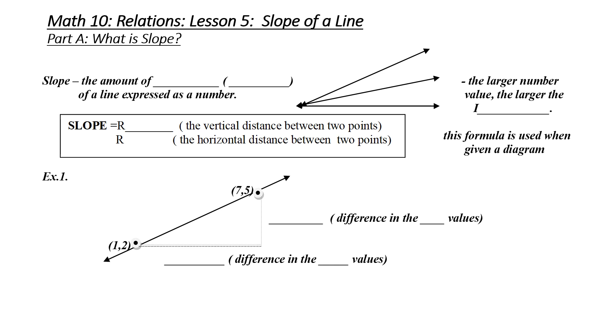Slope is the amount of incline or steepness of a line expressed as a number. The larger the value, the larger the incline or slope.